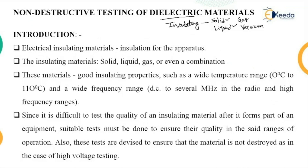Vacuum means the pressure of air which is below atmospheric pressure. These four kinds of insulating materials can be used in electrical devices either as an insulating material or for quenching the arc in circuit breakers. This is just an introduction and we will see details about all the testings done on electrical apparatus.